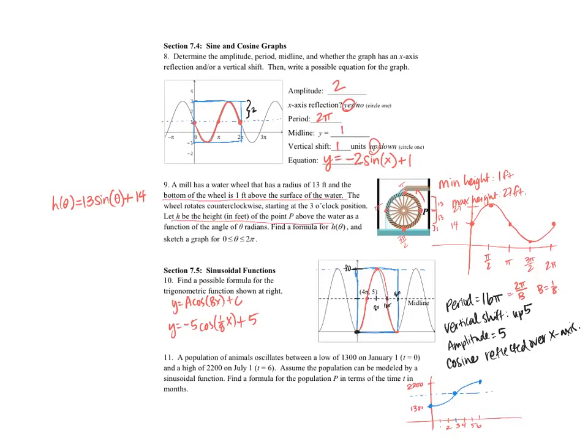And so I want to find a formula for a population P in terms of time T in months. Okay. So one thing I might notice is that I've only drawn half of my period here. At 9 months and then at 12 months. At 9 months it'll go back down to the midline and then at 12 months it'll be at the minimum.